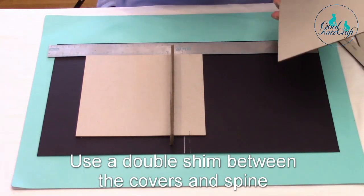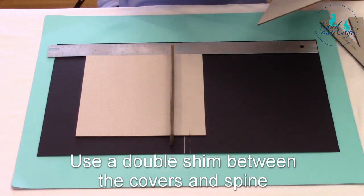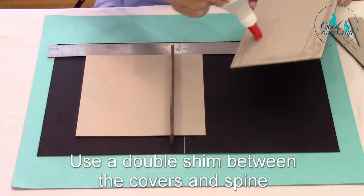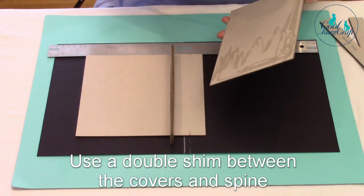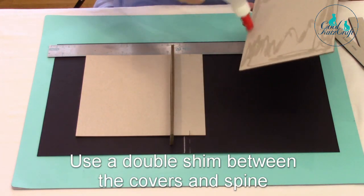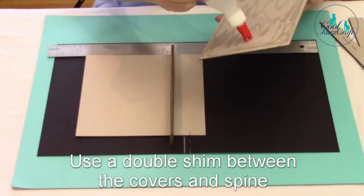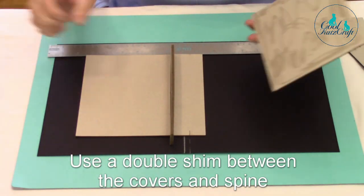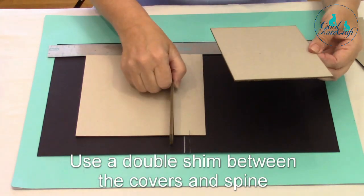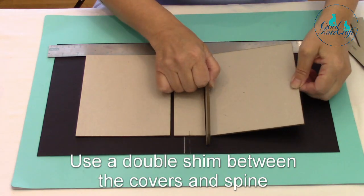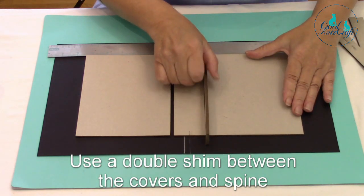While that's happening, I can put the glue on my other piece of cover. Sorry, this bit truly is like watching the paint dry, but in this case it's watching glue dry. Okay, so take our shim, pop it there, butt it up.